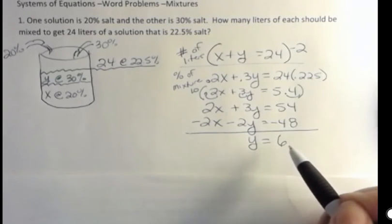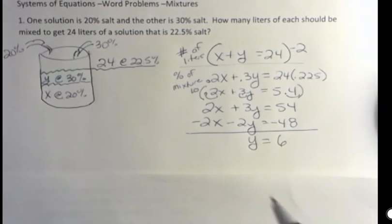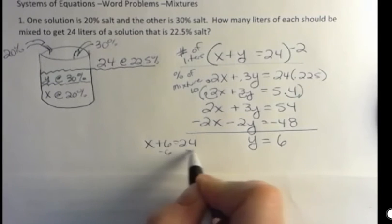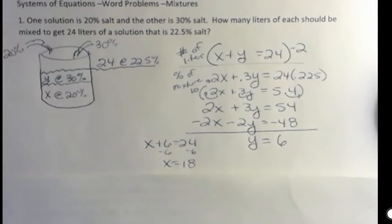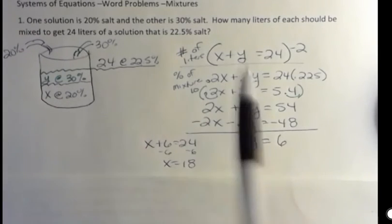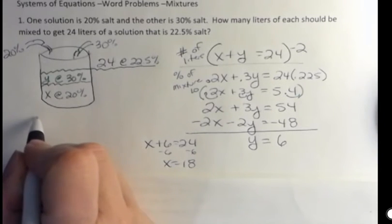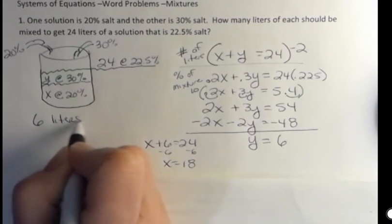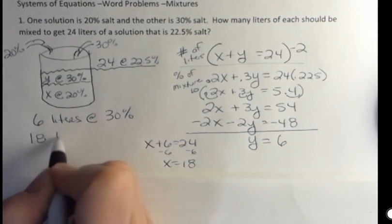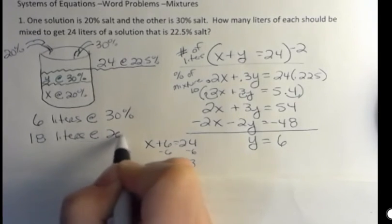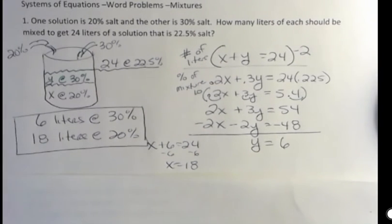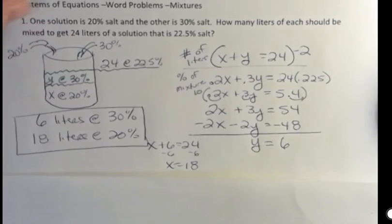So I need 6 liters of the Y solution. If I need 24 liters all together, I know that I can just subtract the 6 and see that I need 18 liters of the X solution, which I said in the beginning, I'm going to need more of this because I'm close to 20. I'm only going up to 22.5. So that makes sense. So I have 6 liters at 30% and I have 18 liters at 20%. And that mixture would get me 24 liters altogether. And it would mix to give me 22.5% salt.